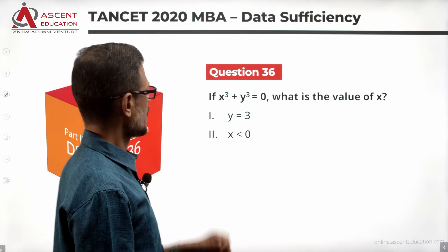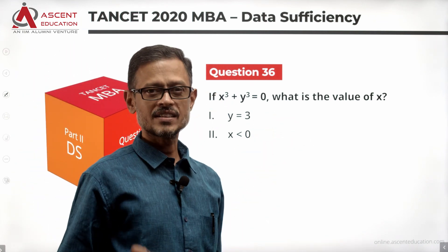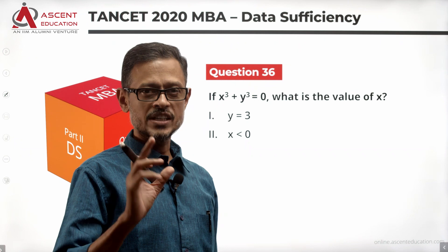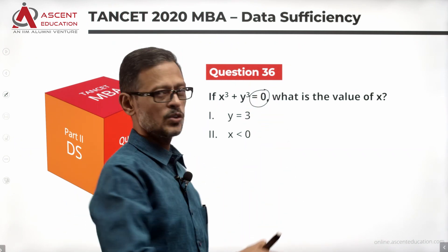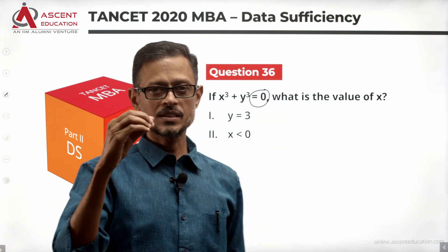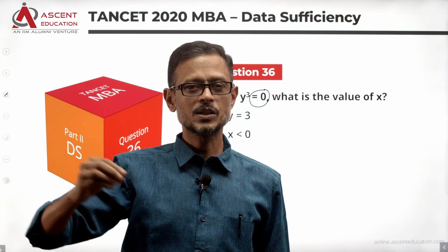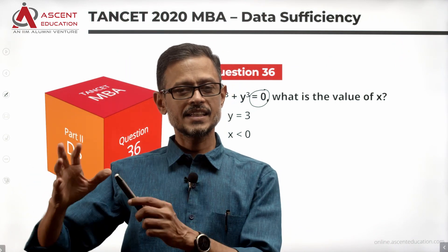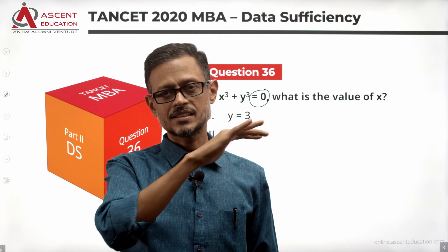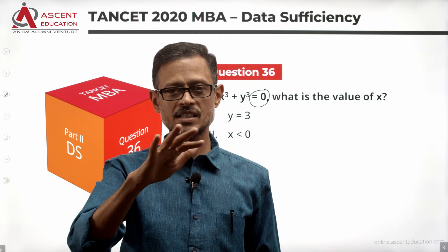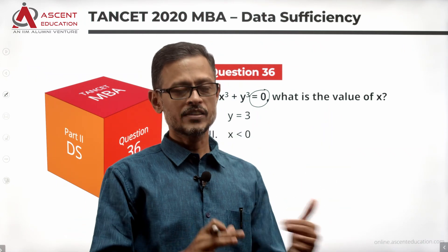If x cube plus y cube equals 0, what is the value of x? If you look at the original question paper, x cube plus y cube is equal to some value on the other side of the equation. That is not the question as it was given in the examination — it was not solvable. We can modify it and solve it.